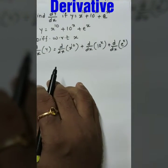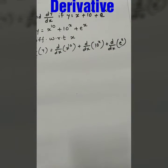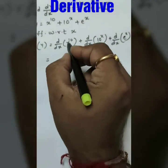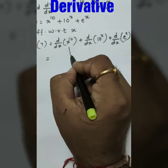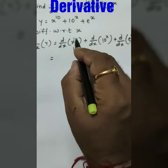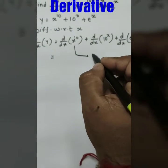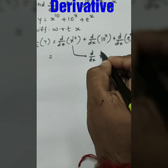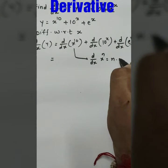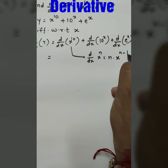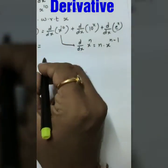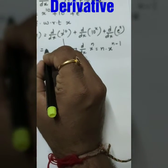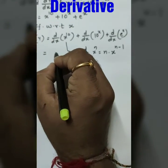Now, we have seen the standard formulas. Here, the standard formula for x raise to n is: dy by dx of x raise to n is n into x raise to n minus 1. So here it becomes 10 into x raise to 9.